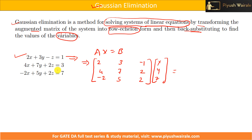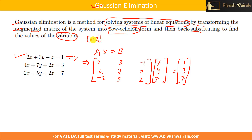b is the constant matrix: [1, 3, 7]. In this method, we consider the augmented matrix [A | b], and then convert it into row echelon form.